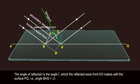The angle of reflection is the angle which the reflected wave front AD makes with the surface PQ, that is angle DA'B.